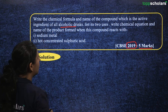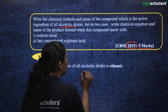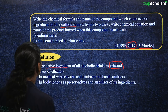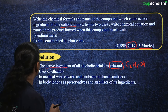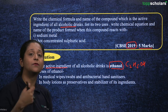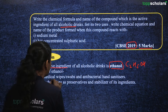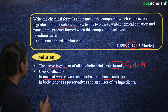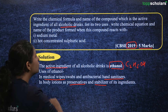First, the chemical formula. The active ingredient in alcoholic drinks is ethanol, with chemical formula C2H5OH. The uses of ethanol: it is used as an antibacterial compound — when a doctor gives an injection, the area is wiped with ethanol using medical wipes. It is also present in hand sanitizers, body lotions, and is used as a preservative and stabilizer.